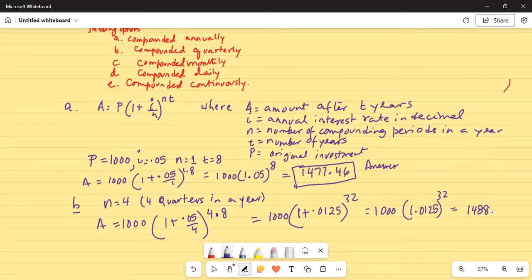And that is equal to, we will use our calculator to do that, multiplied by 1000. And that is $1488.13. So you can see the effect of compounding. You're getting more money at the end of four years than when it's compounded annually. This is your answer for part B.